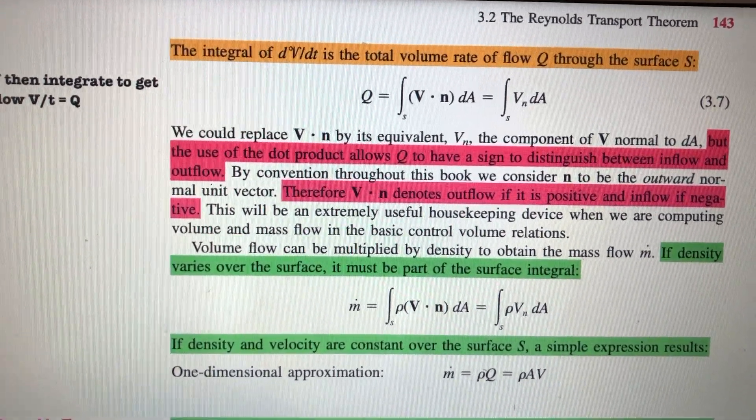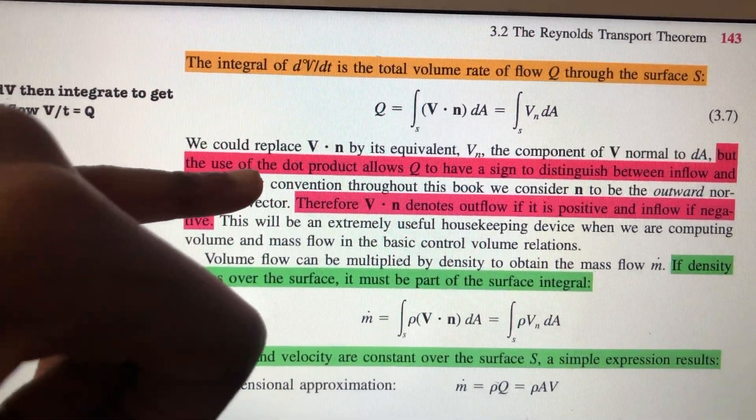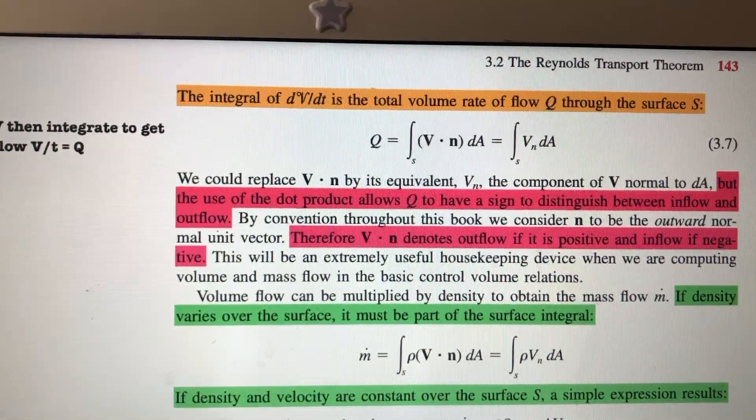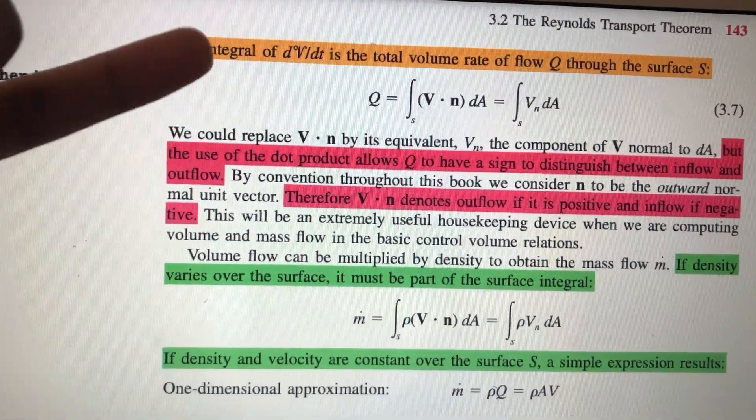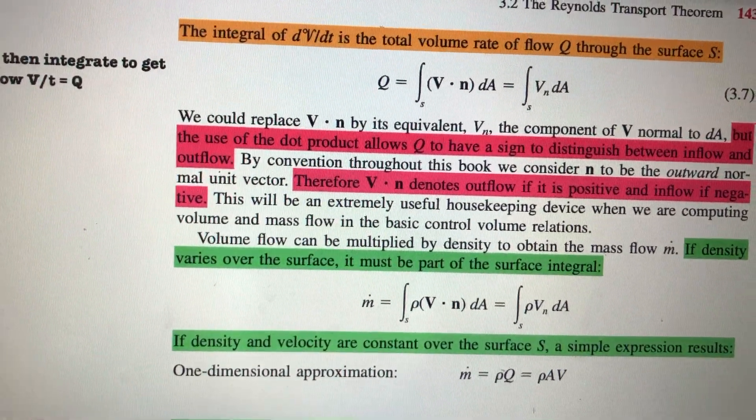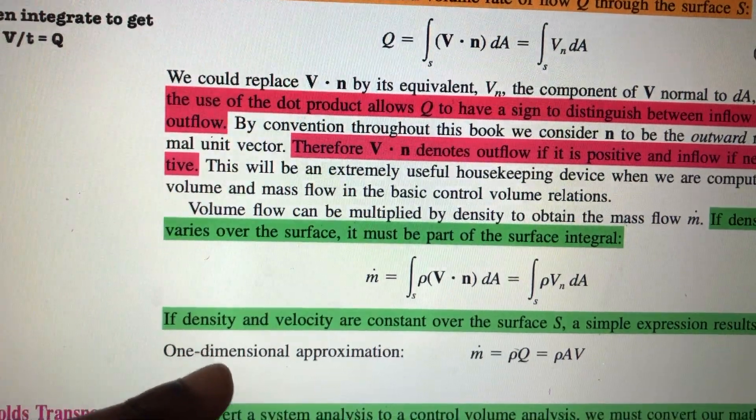Pink is when you're looking at the method - particularly things that you have to pay attention to when you're looking at equations or the definition of particular variables within an equation. Green is the method, so how you do this.